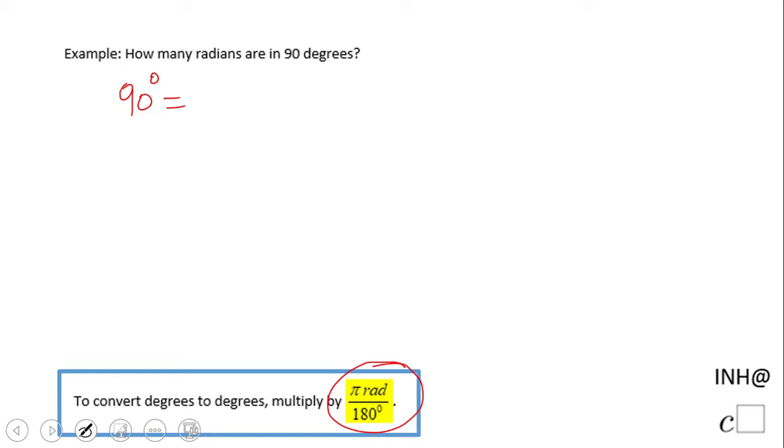You see here the conversion fraction, as I like to call it. What do we have? Because 360 degrees equals 2π, or 180 equals π, that gives you these two conversions: 360 over 2π or π over 180. Very important.